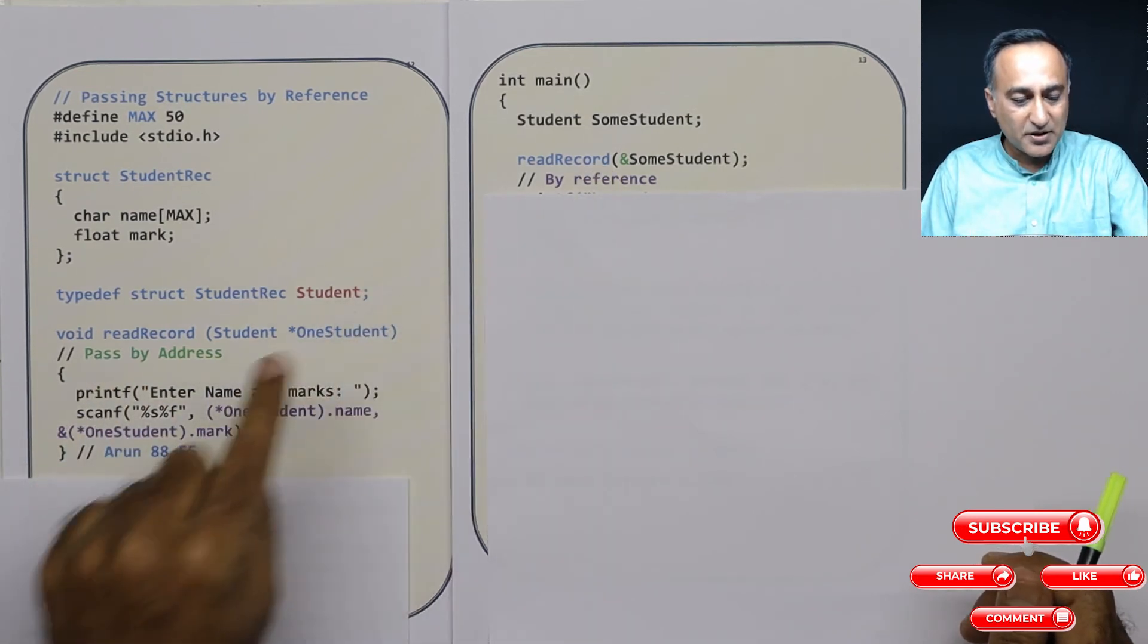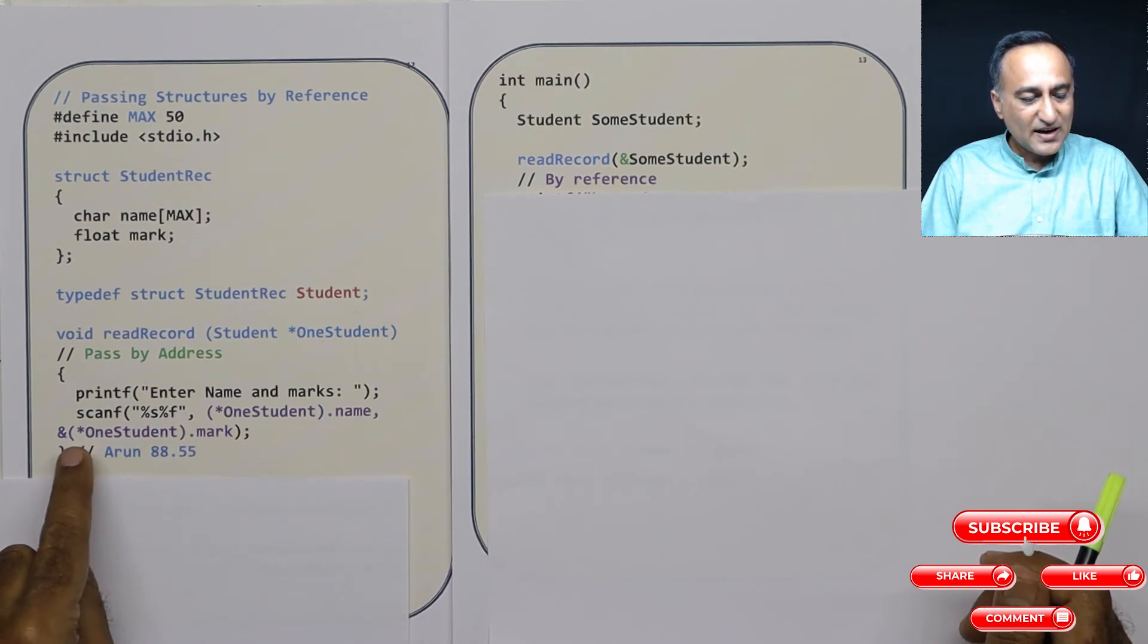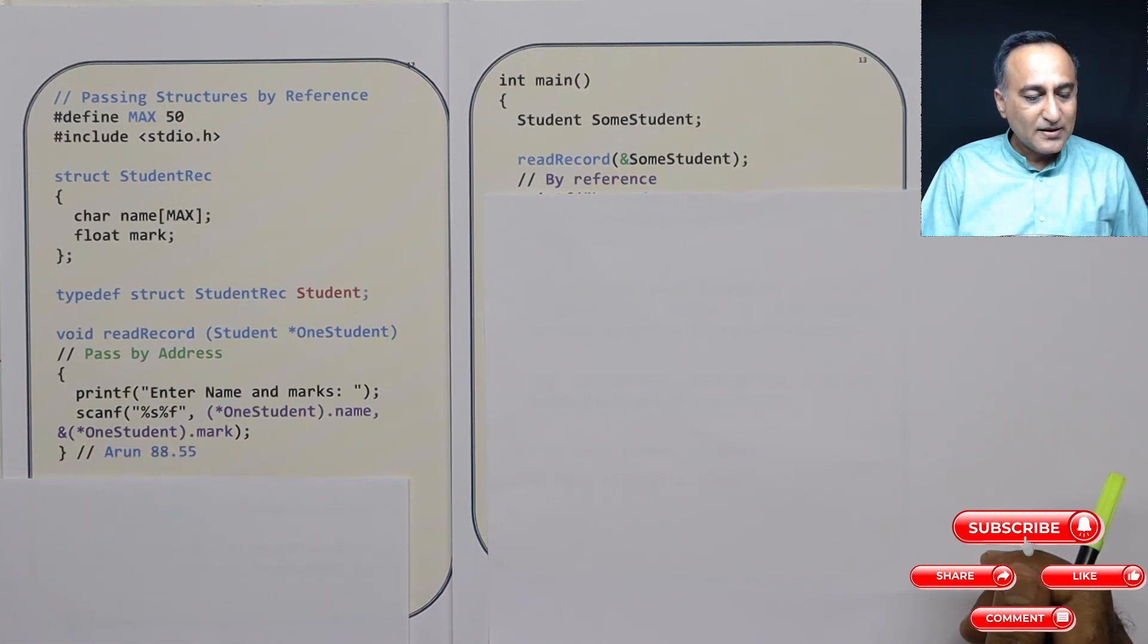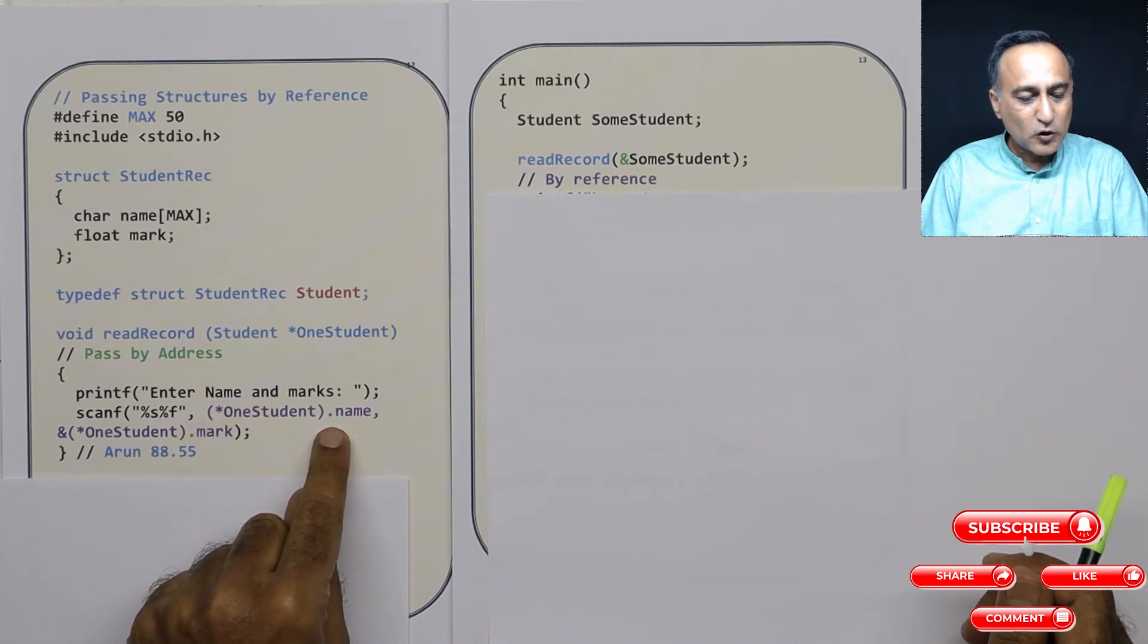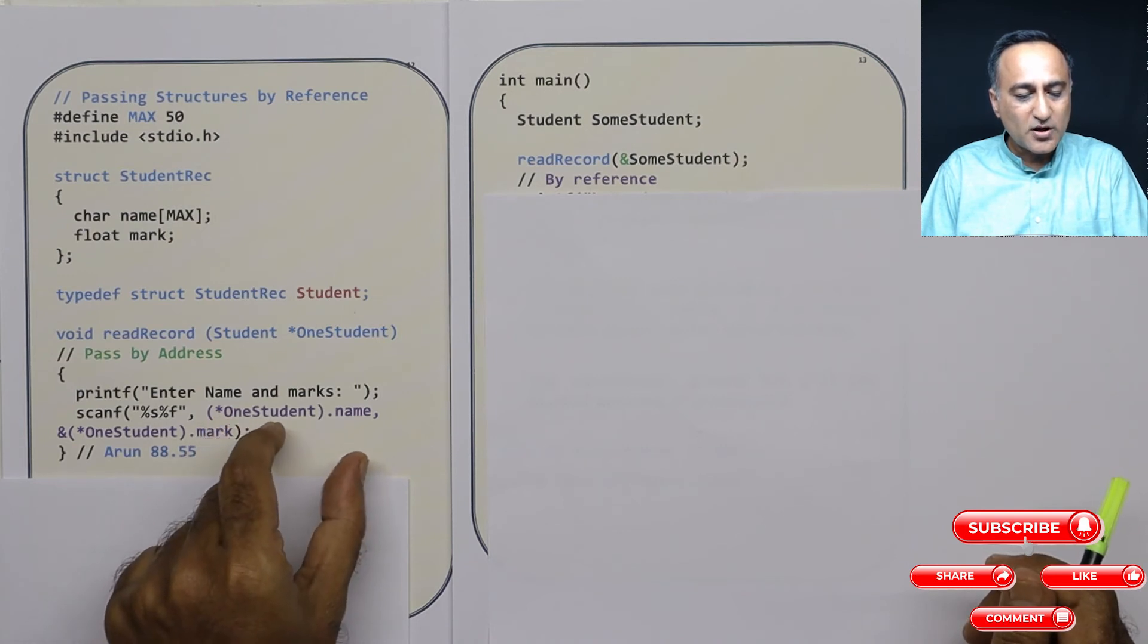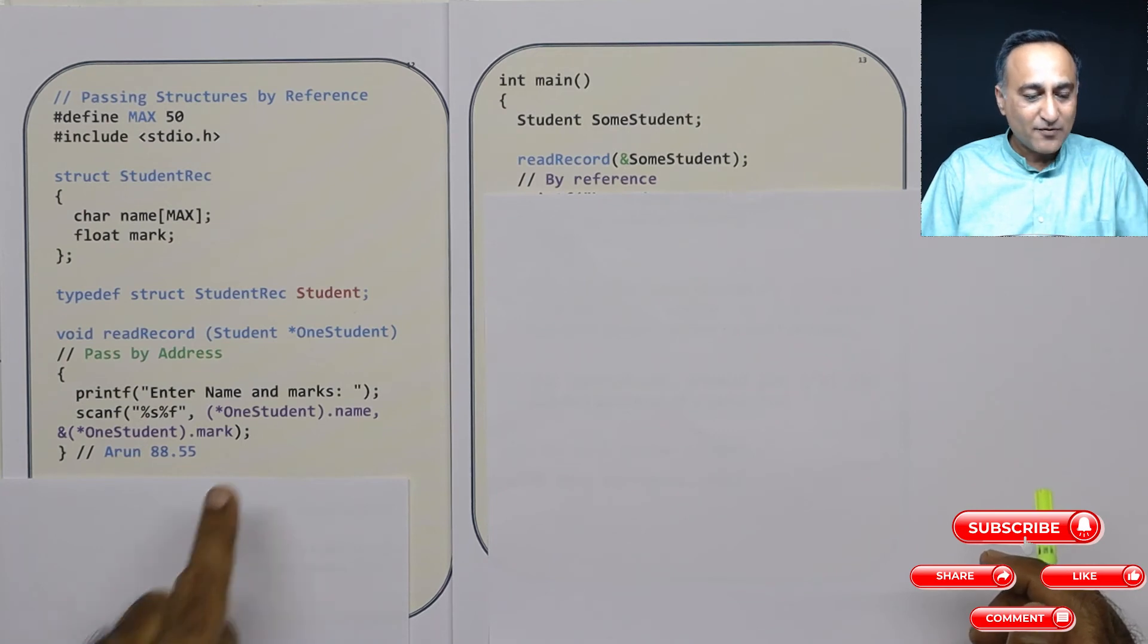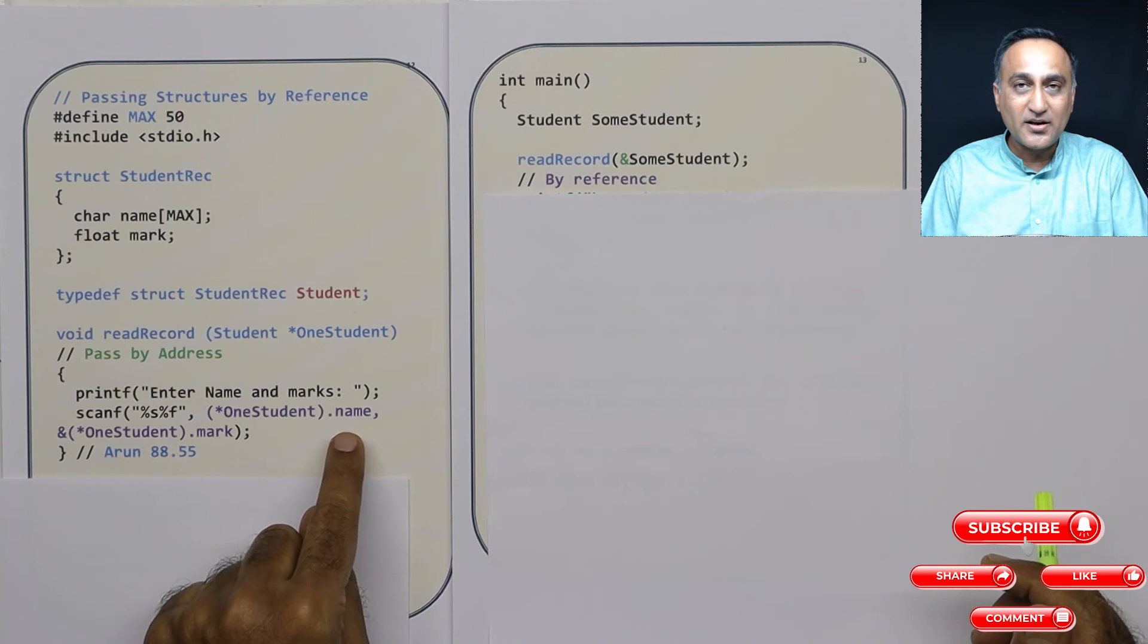And then I am saying address of bracket star one student dot marks. The reason you have bracket with this star is the precedence of dot is higher than star. If you forget to put this in bracket, it will take one student dot name first and try to find the address of that. Whereas we want the address of the structure, not the address of this particular variable.